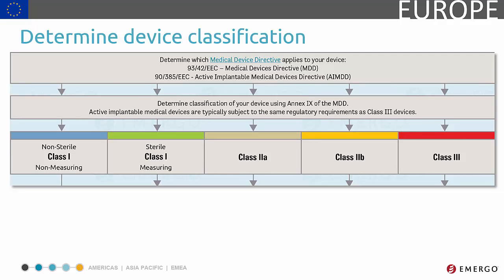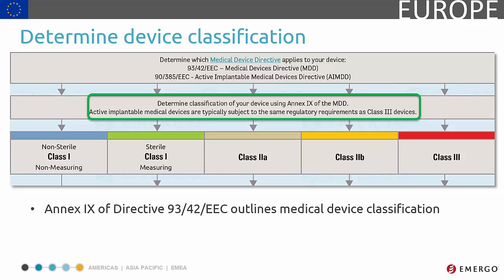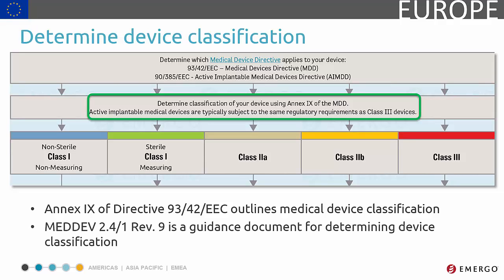Device classification depends on 18 rules outlined in Annex 9 of the Medical Device Directive. There is also a guidance document which specifically covers product classification. It provides detailed explanations of each class and examples of how intended use, duration, level of invasiveness, and area of effect are calculated. It's an invaluable tool that should not be overlooked.